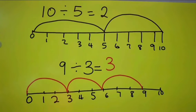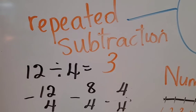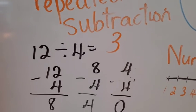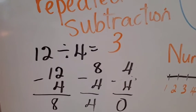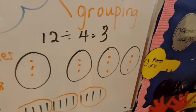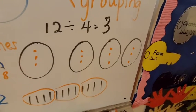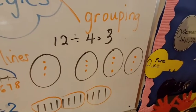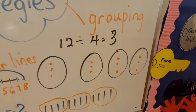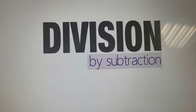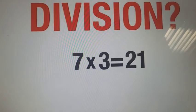Here again, you can see repeated subtraction being used. Also, we can use grouping. 12 divided by 4 equals 3. We make 4 circles and share them equally.